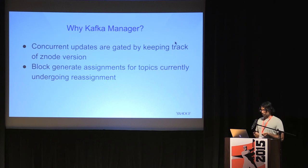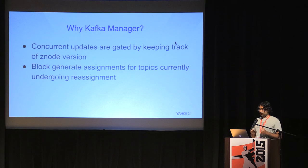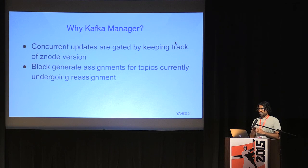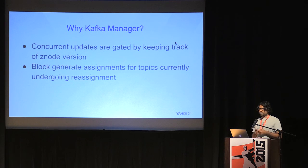Another thing you get with Kafka manager is the ability to block the generate assignments command for topics that are currently undergoing reassignment. What could happen is if you have a topic with a replication factor of three, and you generated new partition assignments and ran the reassign partitions command while it's undergoing reassignment, the number of replicas assigned to a partition could jump from three to five, because Kafka has no place where it stores the actual replication factor value — it's entirely determined by the number of replicas assigned to a partition. So if you generated assignments at that time, your assignments would generate with a replication factor of five instead of three. We can gate this because in Kafka manager, we know which topics are currently undergoing reassignment.